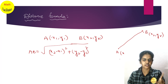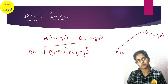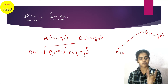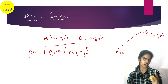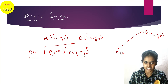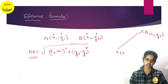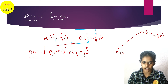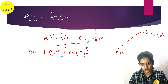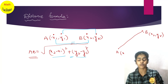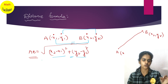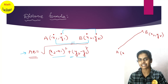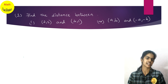The derivation of this formula I will give in a separate video, but derivation will not come in your examination. Please memorize this formula — the distance between any two points is under root of (x-coordinate minus x-coordinate) whole square plus (y-coordinate minus y-coordinate) whole square, with a plus sign between them, all under a square root. This is derived using the Pythagorean theorem.